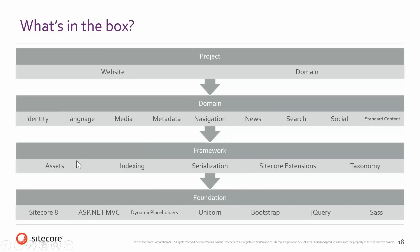In the framework: asset management handles loading JavaScript and CSS for functionality related to light boxes and media on pages. Indexing covers Lucene search indexing across multiple modules — both news and the search module leverage the indexing features. Serialization is related to version controlling Sitecore items. Sitecore extensions are extension methods on the item object, site object, and helper functions built on top of Sitecore. And finally, taxonomy is a tagging engine on top of Sitecore.